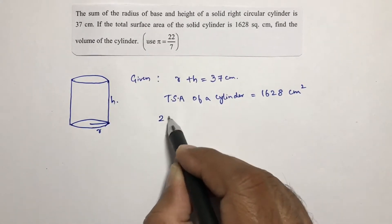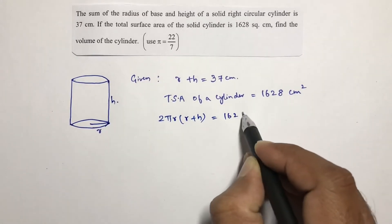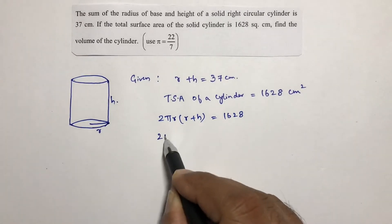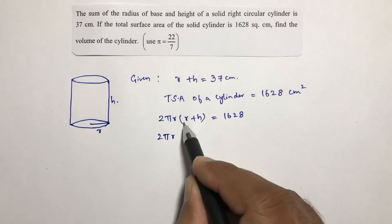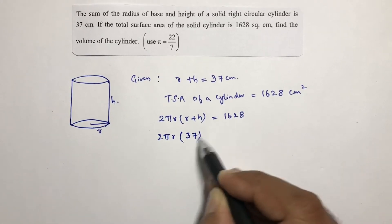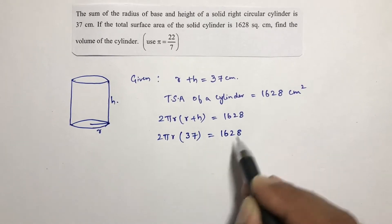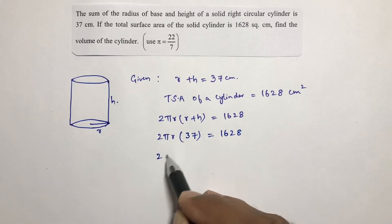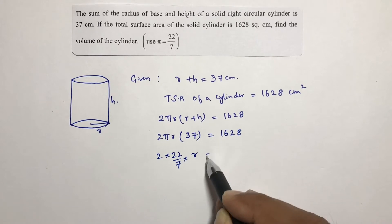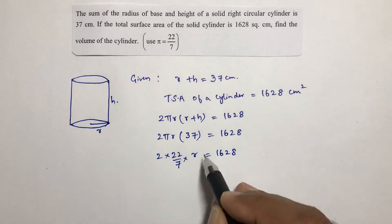The total surface area of a cylinder is 2πr(r + h). So 2πr(r + h) equals 1628 centimeter square. Since r plus h is 37, we substitute: 2 times 22/7 times r times 37 equals 1628.